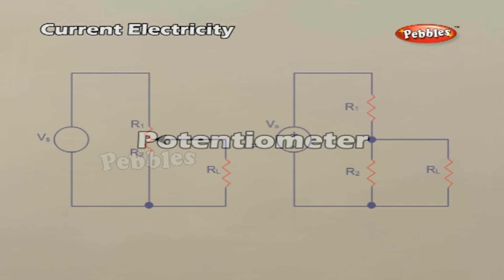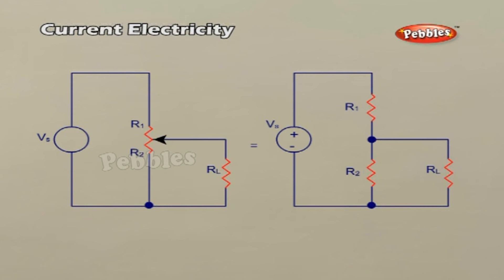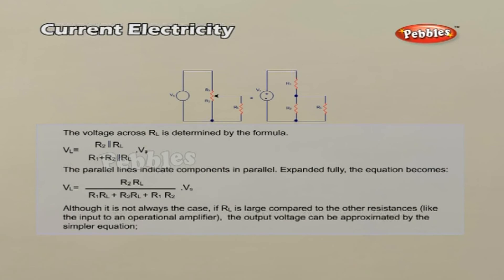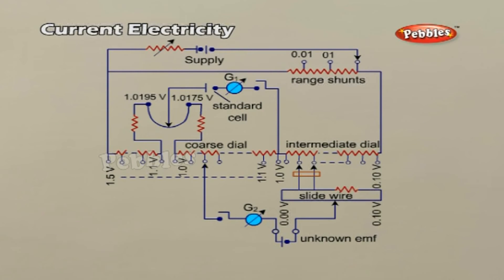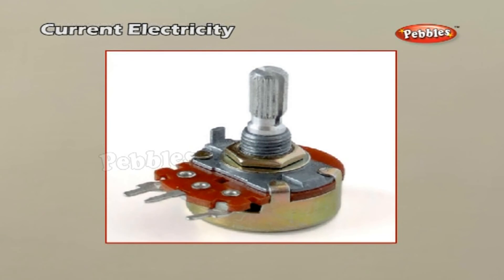Potentiometer: A potentiometer is a variable tapped resistor that can be used as a voltage divider. It is a three-terminal resistor with a sliding contact that forms an adjustable voltage divider. If all three terminals are used, it acts as a variable voltage divider; if only two terminals are used, it acts as a variable resistor or rheostat. Potentiometers are commonly used as controls for electrical devices, such as the volume control of a radio.